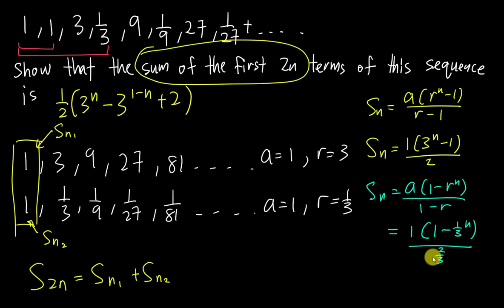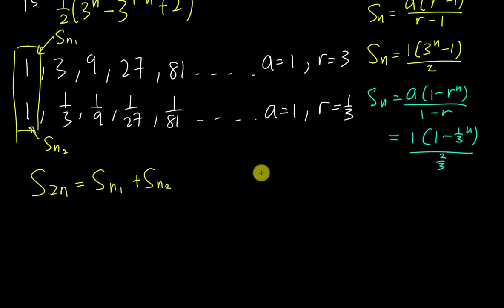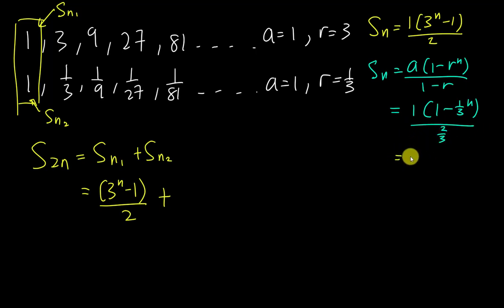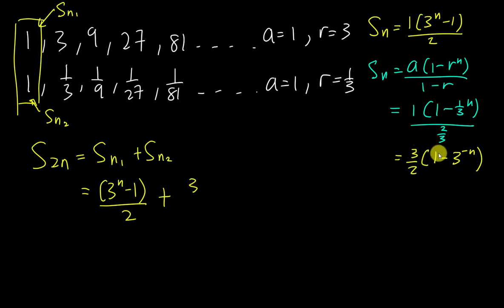Now I want to add both sums together to get S(2n). So S(2n) equals (3^n - 1)/2 plus the second part. For the second part, dividing by two-thirds is the same as multiplying by three-halves. So Sn2 = (3/2)(1 - 3^(-n)). I can rewrite 3^(-n) noting that (1/3)^n equals 3^(-n). To combine over a common denominator of 2, I multiply the three-halves part through, giving (3 - 3^(1-n)) / 2.